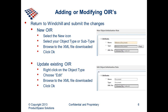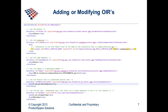The nice thing about making changes to OIRs is they are immediate. There's no need to restart Windchill for the effects to take place. Once you upload the new OIR, any new objects you create will reflect it immediately. Here's an example of what an OIR looks like — opened in Notepad++ which color-codes the XML file. In the next couple of steps we'll go through some snippets and explain what they do.